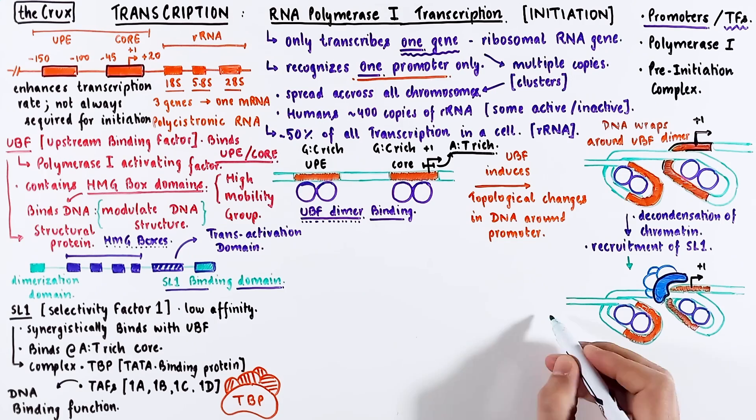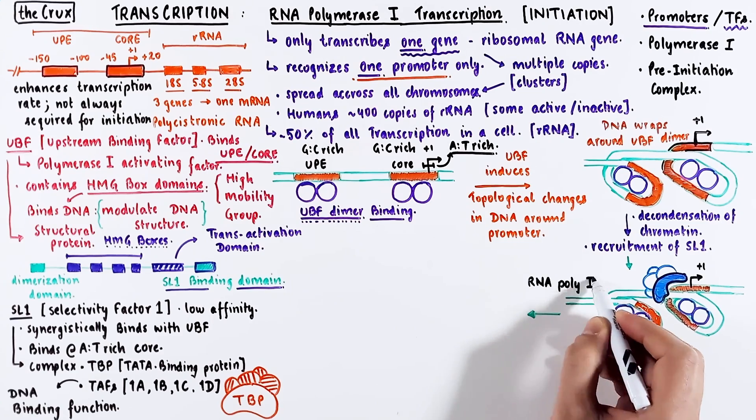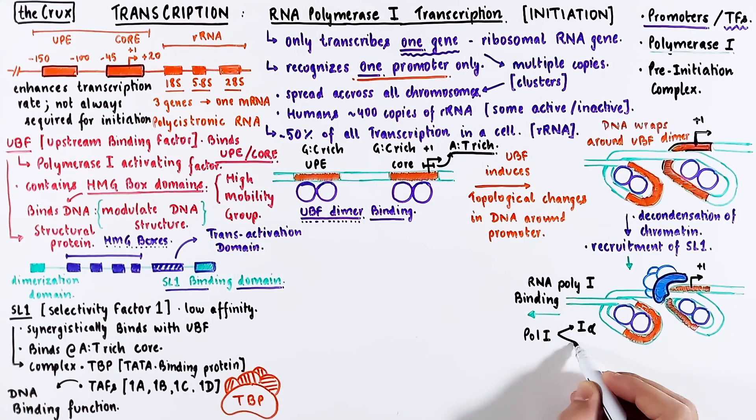This complex of TBP and UBF enables the recruitment of RNA polymerase 1. Let's discuss a little bit about this enzyme. Polymerase 1 comes in two forms, 1-alpha and 1-beta. The active form, which works in the transcription, is 1-beta. This is because it has a lot of important binding factors.